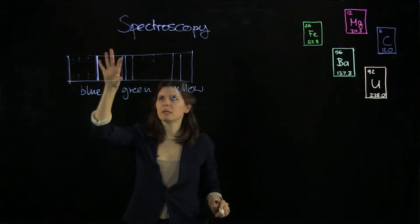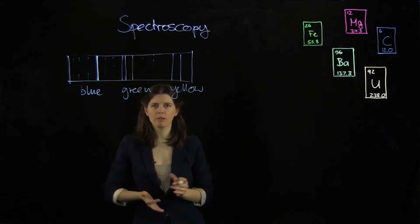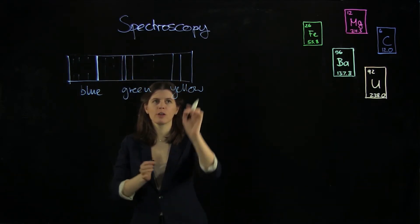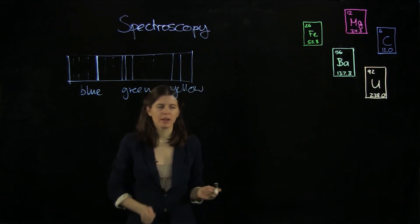And that missing part or those missing parts here, they contain all the information that we want. It's actually not the colors, it's what's missing from there. Now how can we understand that?